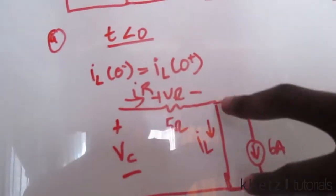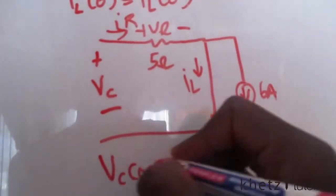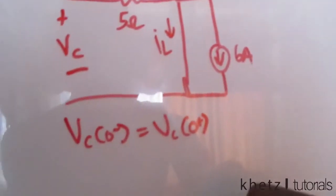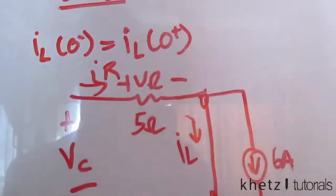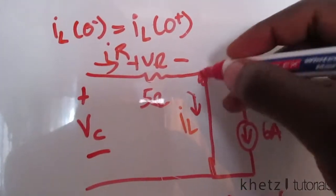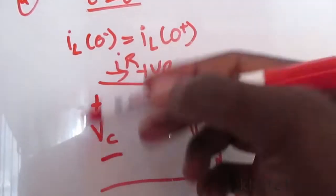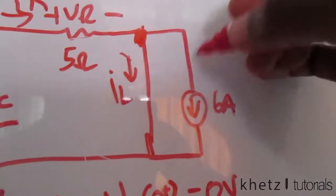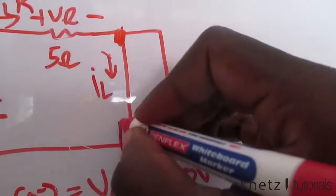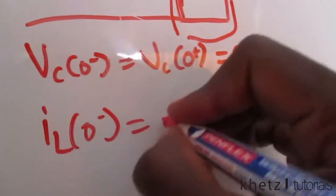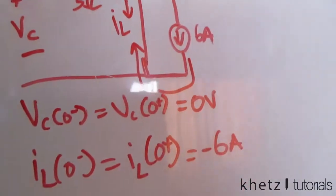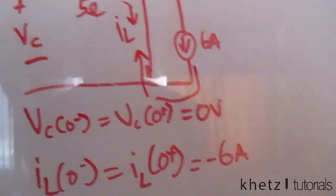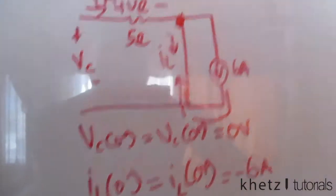VC is actually in parallel with a short circuit, so anything in parallel with a short circuit is shorted out — VC(0-) equals zero volts. For IL, the current source flows in a direction that forces IL to flow in the opposite direction, so IL equals negative six amperes — the negative of the current source value.